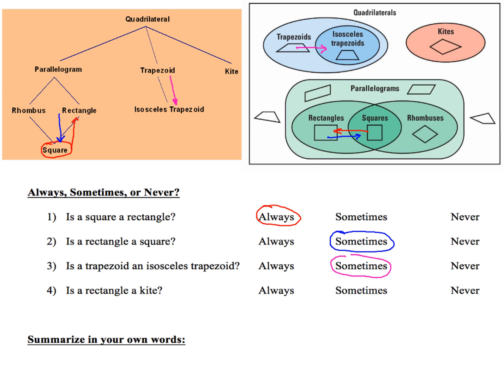Now for the last one, number four is a rectangle a kite. Well you can clearly see that a rectangle is right here and the kite is all the way over there. They're not connected at all in the family tree. So that's one of the things that you can kind of take a look at. So a rectangle will never be a kite ever. So that's it for this piece. Some of you will want to summarize this in your own words to kind of help make sense of it, whether you look at it from the family tree perspective or the diagram perspective.